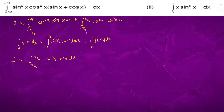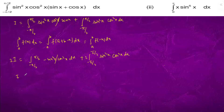Where we have added the two integrals, the sine cube x terms get cancelled, and from minus pi by 2 to pi by 2 we are left with 2 sine square x cos square x dx. Therefore I equals integral from minus pi by 2 to pi by 2 of sine square x cos square x dx.